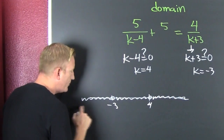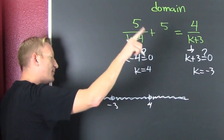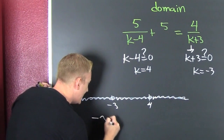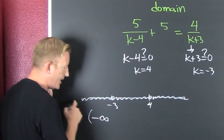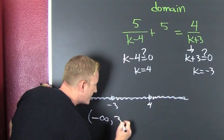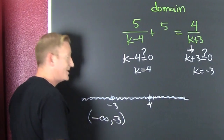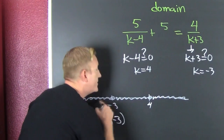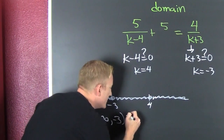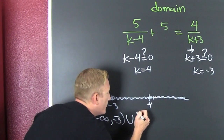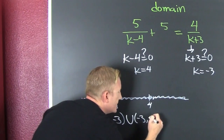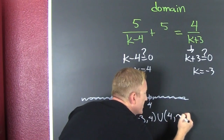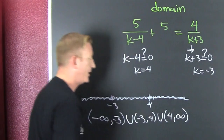How do we write this? It's an ordered interval from left to right. That's minus infinity all the way to minus three, union it up with minus three to four, union it up with four to infinity and beyond!